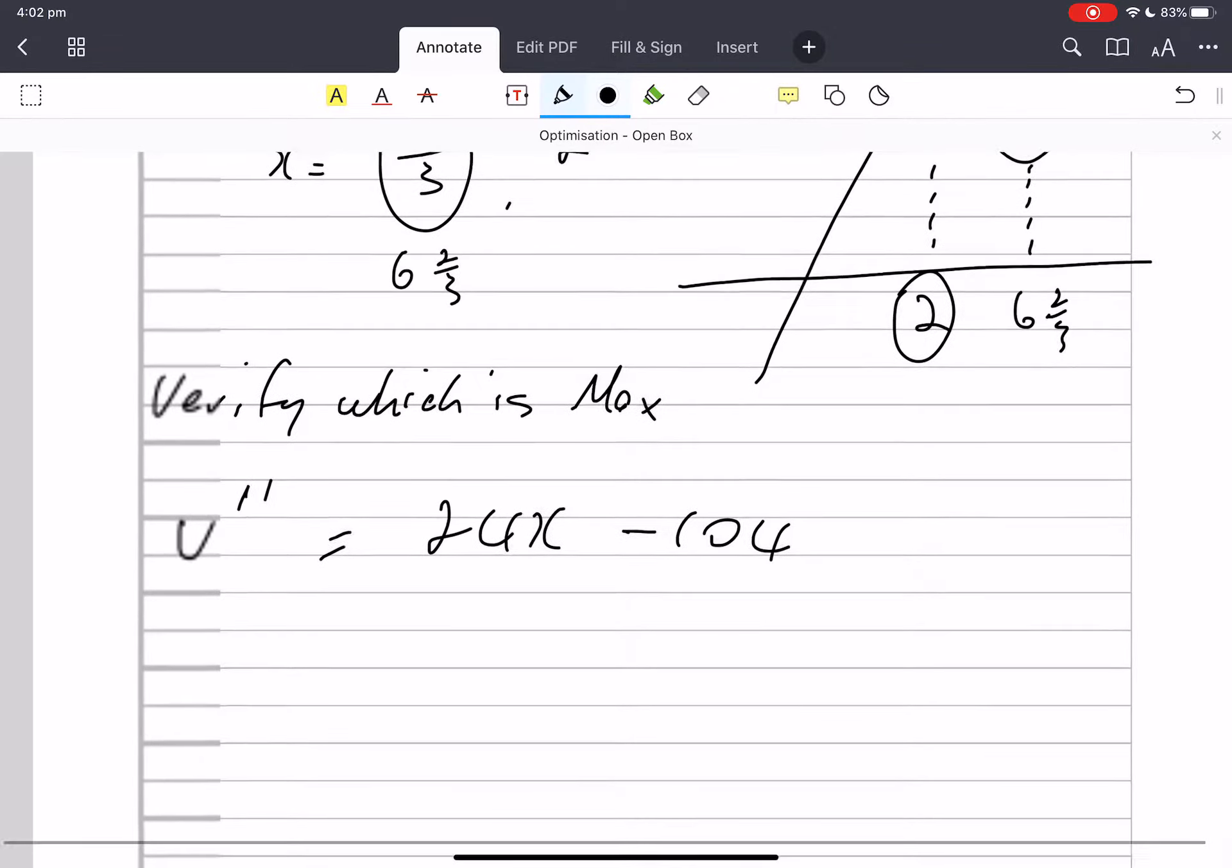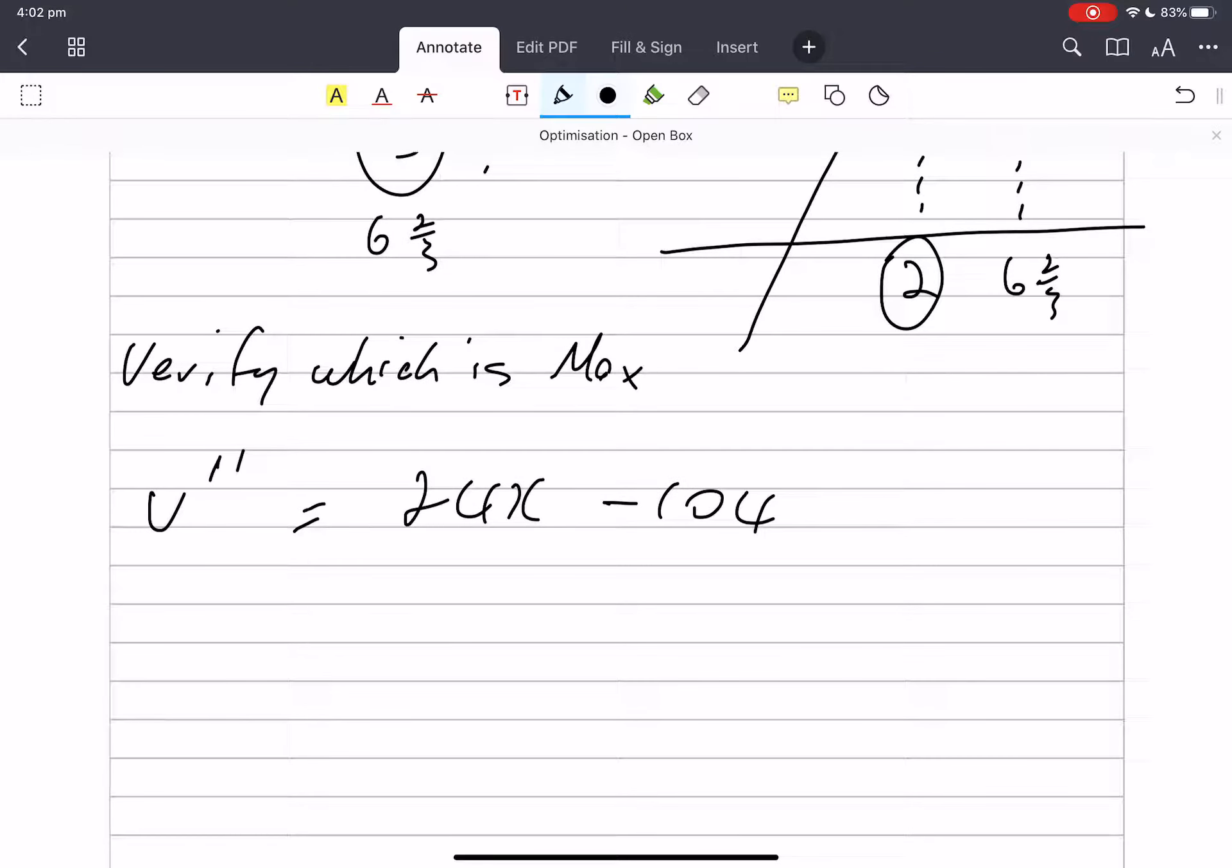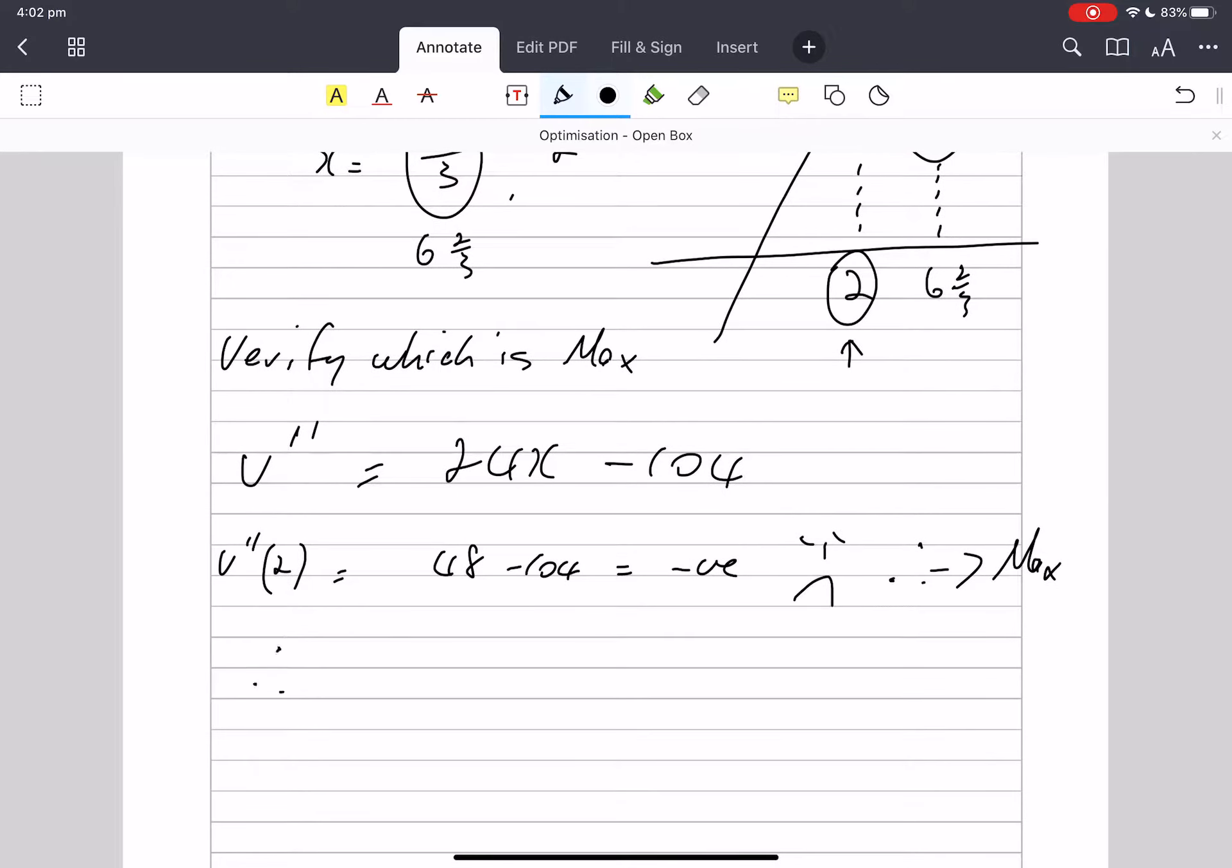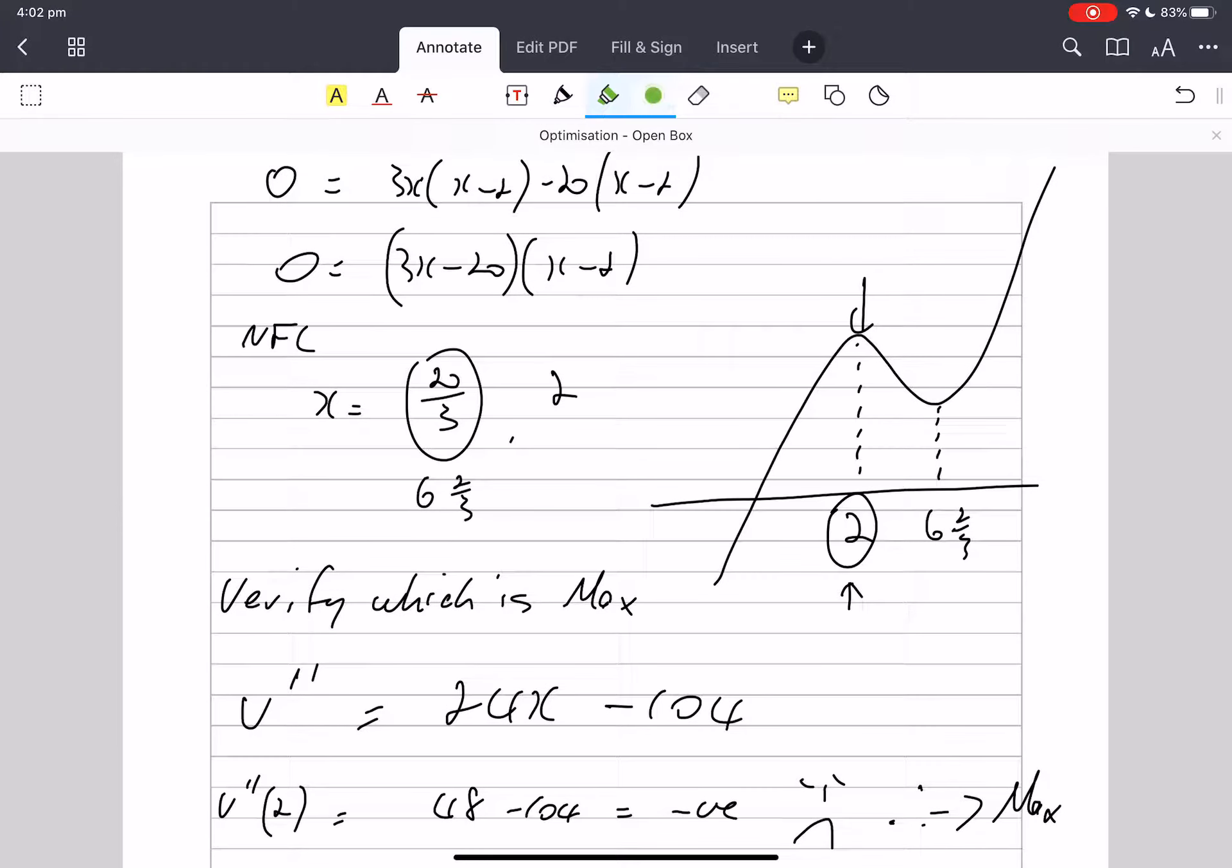Okay, back so I can see. And I'm wanting to put in a 2, so V double dash of 2 will be 48. That's negative, therefore it's a maximum. So I've mathematically determined that that is a maximum. I have also graphically verified that that is a maximum.